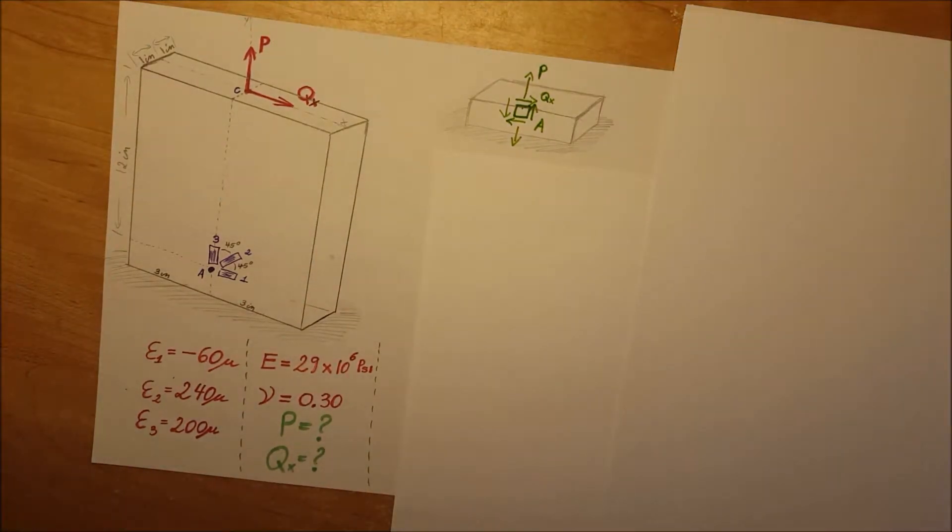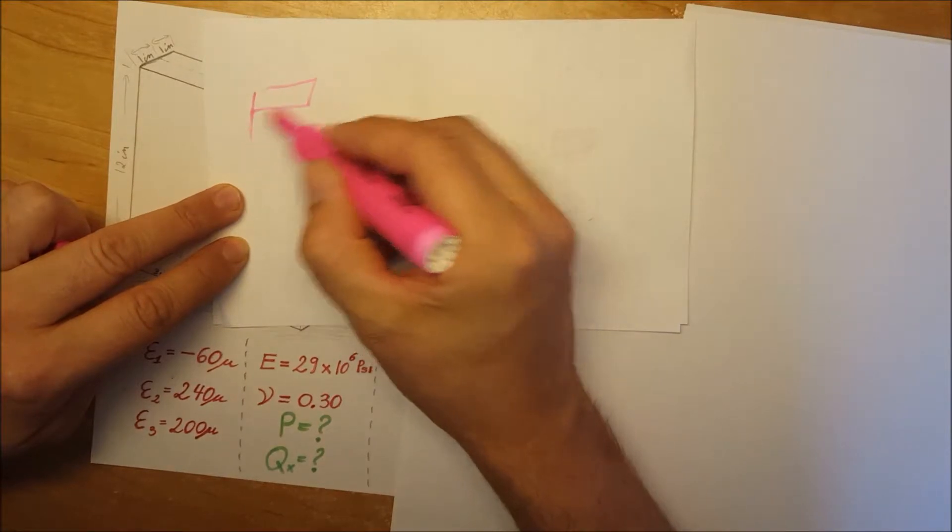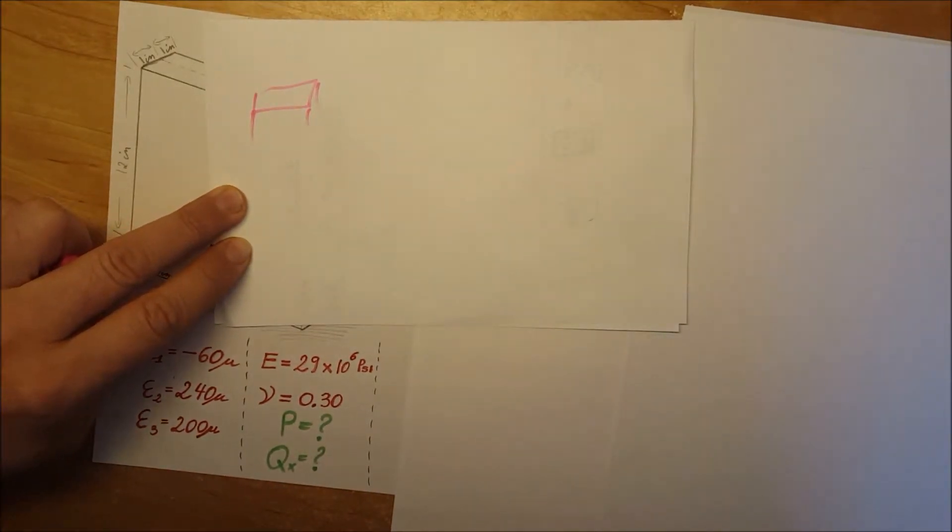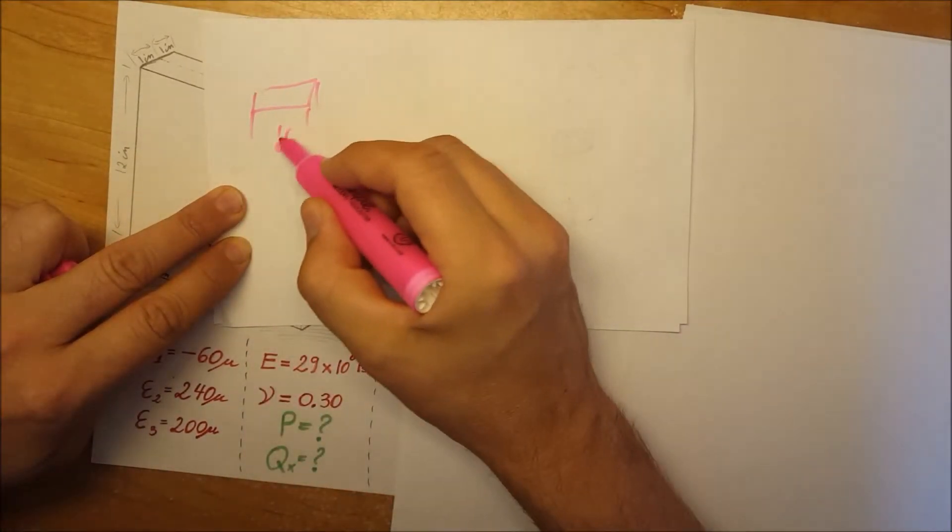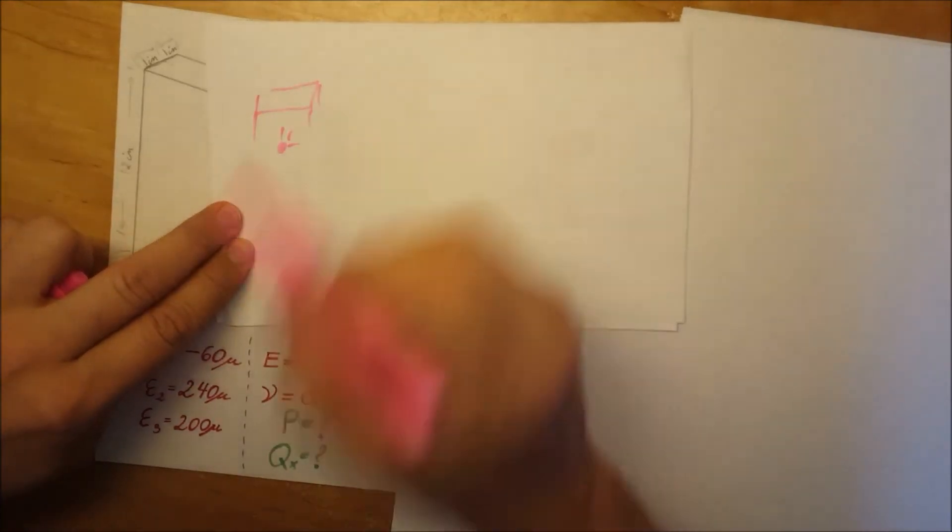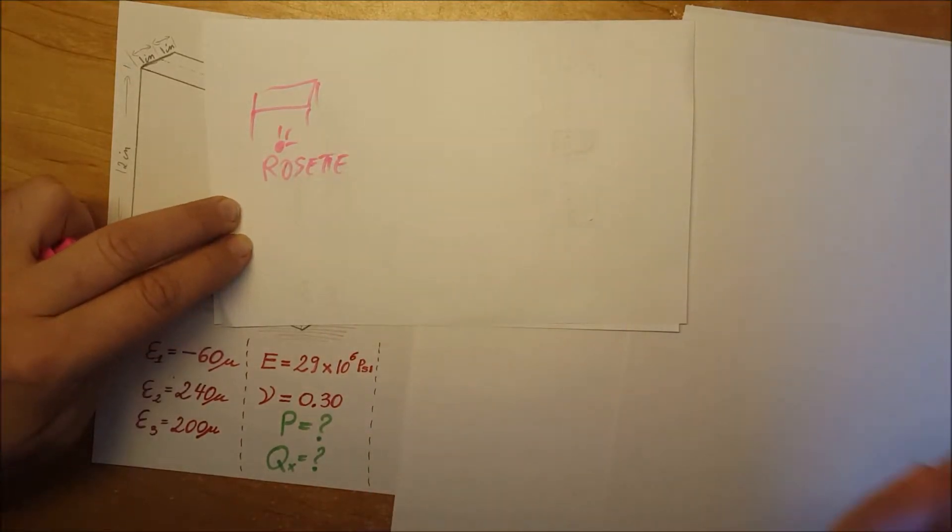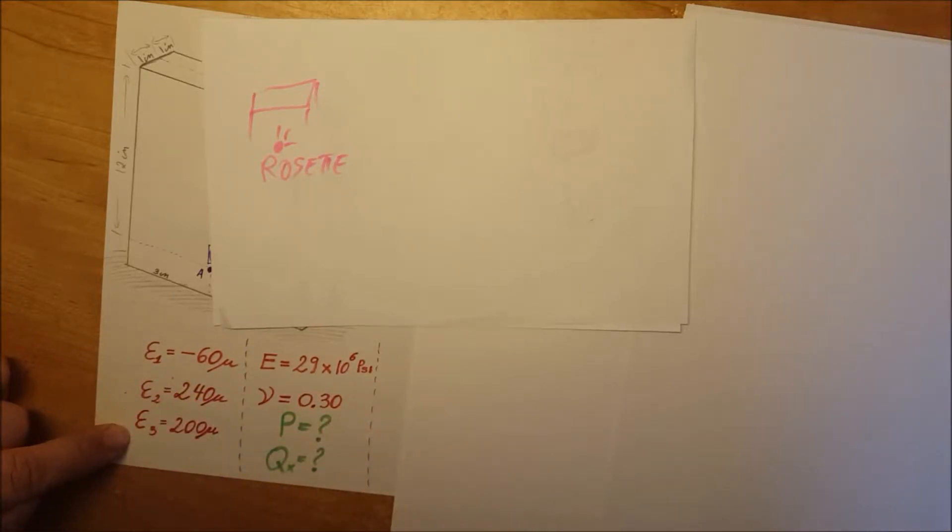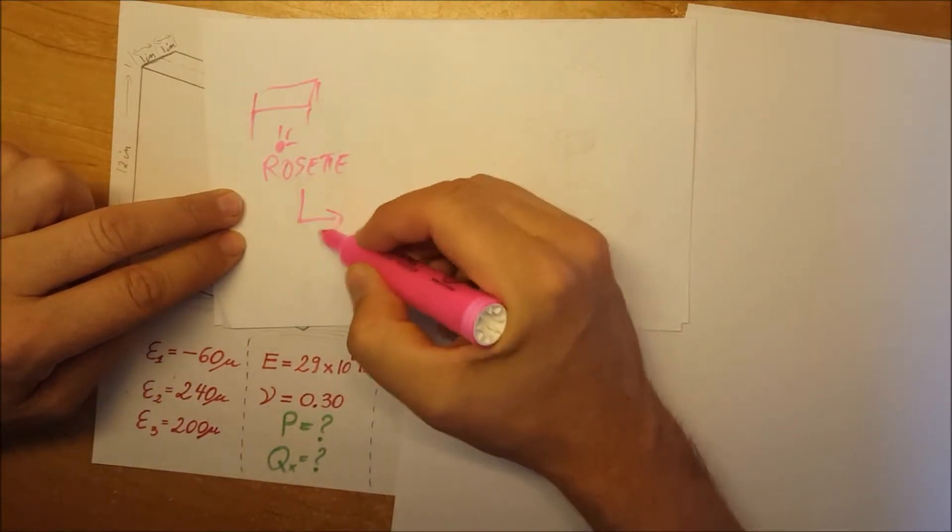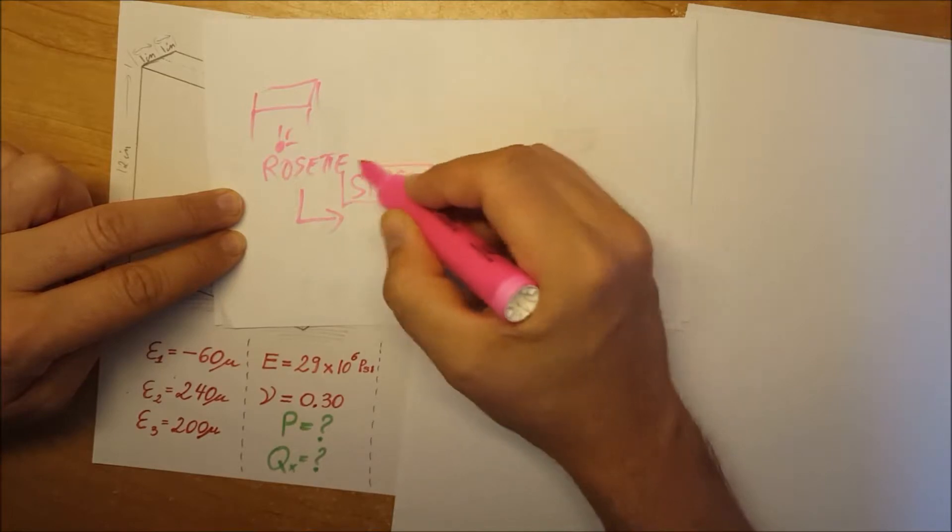Before we continue, let's have an overview of what is happening in this problem. We have this rectangular rod and somebody wants to do some measurements, so they placed a 45-degree rosette on it right at the x and y direction. This rosette is going to measure whatever is happening, giving us the values ε₁, ε₂, and ε₃. From the rosette, we're getting strain measurements—strains in the system.